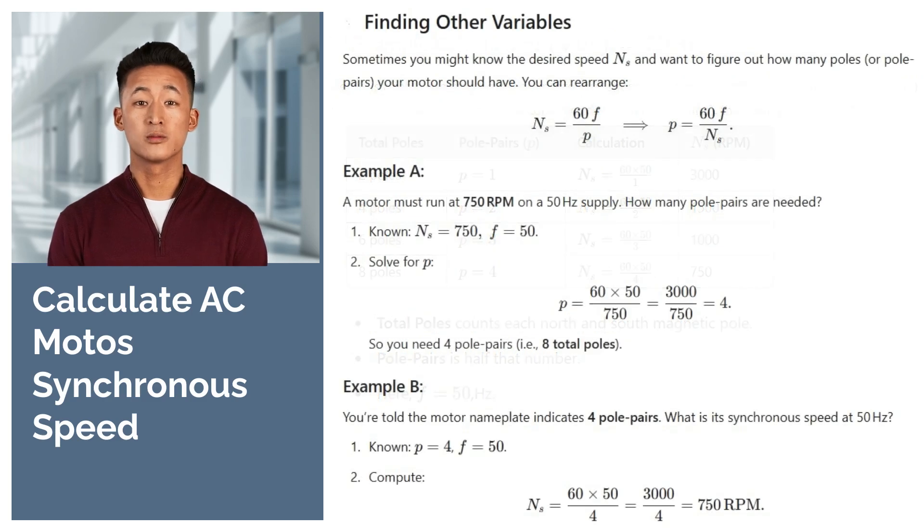In the other examples, the formula is rearranged so you can solve for the number of pole pairs if you already know the target speed. You can pause the screen and verify the result yourself.